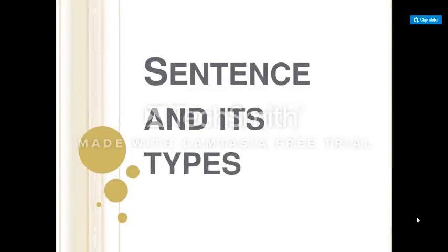Assalam o Alaikum students, how are you? We have successfully completed the reading comprehension section — there are seven chapters from Book One, the Punjab textbook. Today we are going to start the grammar part, and the topic for today's discussion is sentence and its types.